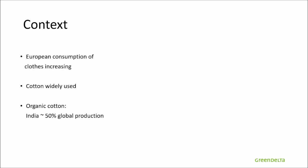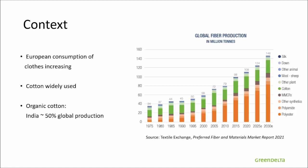Over the last decades, the European consumption of clothes has kept increasing. This is not without impacts on the environment, which is precisely what we will be studying today. The reason we chose a product made of cotton is that this fabric is widely used for clothes. As you can see on the graph from Textile Exchange, cotton is the second fiber used in the world in terms of volume after polyester.